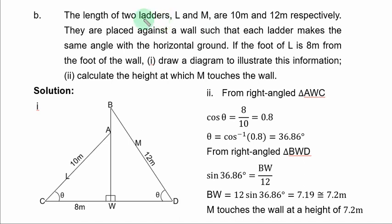Question 10b. The lengths of two ladders L and M are 10 metres and 12 metres respectively. They are placed against a wall such that each ladder makes the same angle with the horizontal ground. If the foot of L is 8 metres from the foot of the wall, draw a diagram to illustrate this information and calculate the height at which M touches the wall.